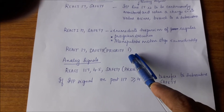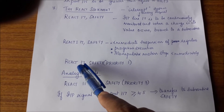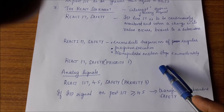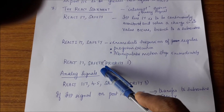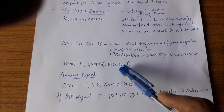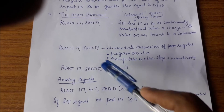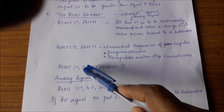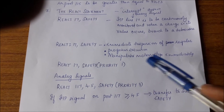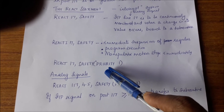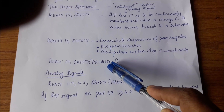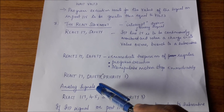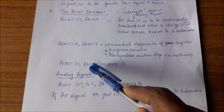You can assign several levels of priority to react statements. For example, react 17 safety priority 1. Suppose input line 17 has a change and we have branched to the safety subroutine. At that time, another react statement with priority 4 also has a change at its input line. Because safety has priority 1 and the other has priority 4, the safety subroutine is allowed to execute completely before branching to the priority 4 subroutine. If it were the other way around — executing a priority 4 subroutine — that one is suspended and branching goes to priority 1, which is the highest priority.